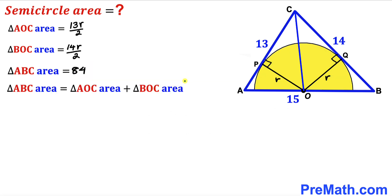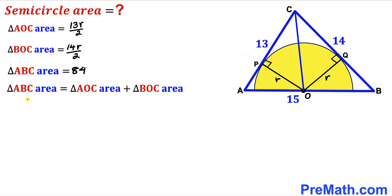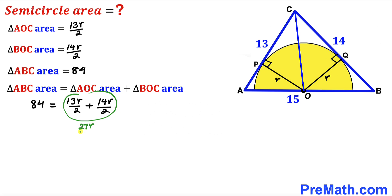Recalling that the area of triangle ABC equals the sum of triangle AOC and triangle BOC, we fill in the values: 84 equals 13r divided by 2 plus 14r divided by 2. Combining these fractions gives us 84 equals 27r divided by 2.